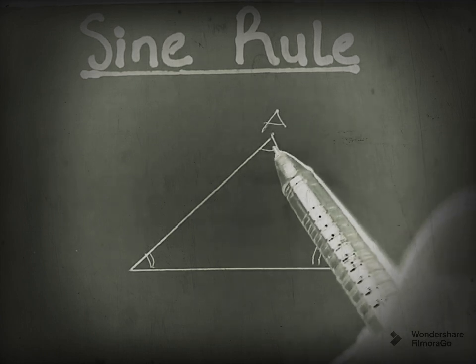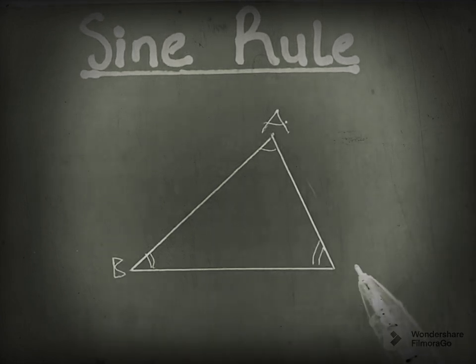It is a formula where we establish a relationship between angles and sides of a triangle. Take for instance, this is angle A, angle B, and angle C.